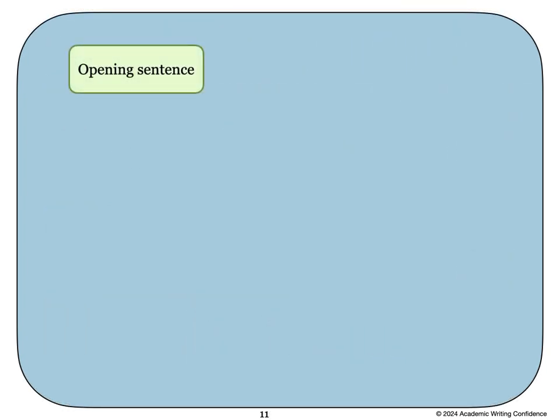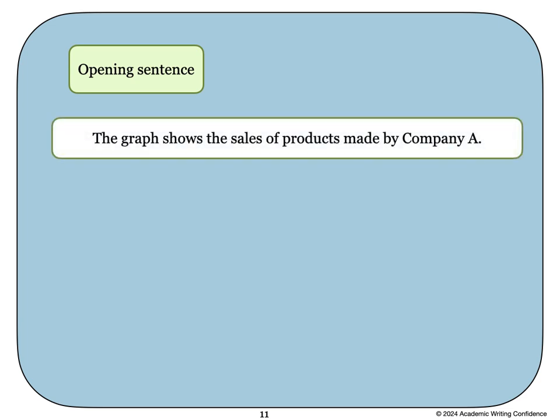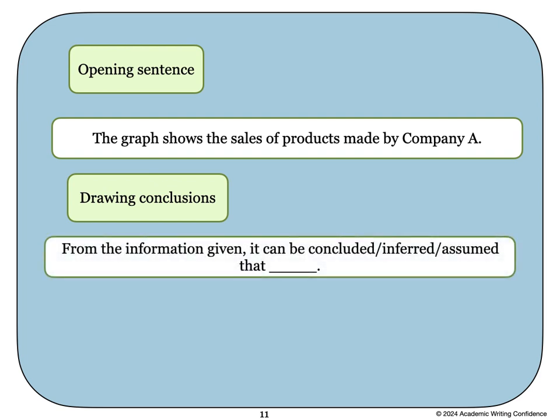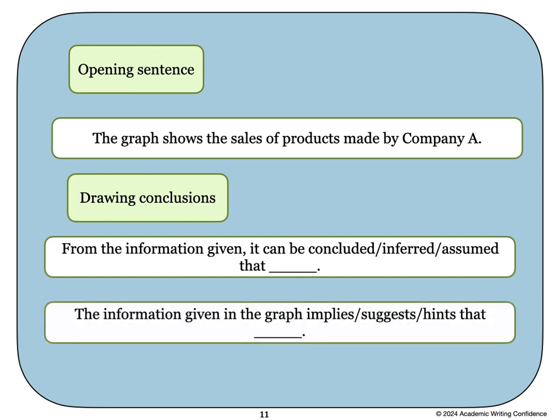Finally, when writing about a graph or chart, you might use this opening sentence: The graph shows the sales of products made by Company A. For your final or conclusion sentence, you might use something like this: From the information given, it can be concluded, or inferred, or assumed that. Or you could write: The information given in the graph implies, or suggests, or hints that.